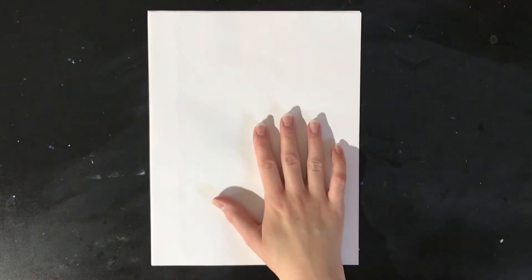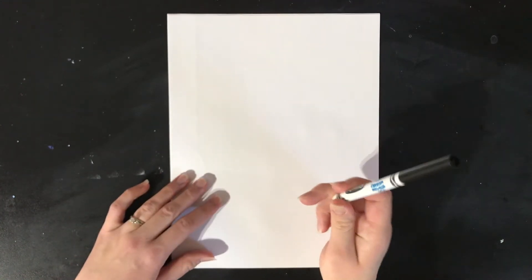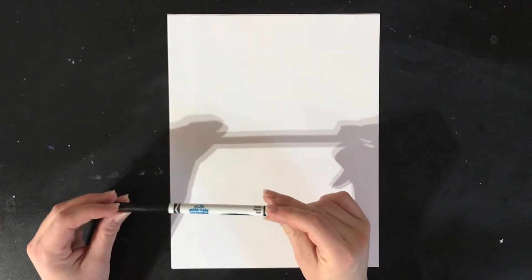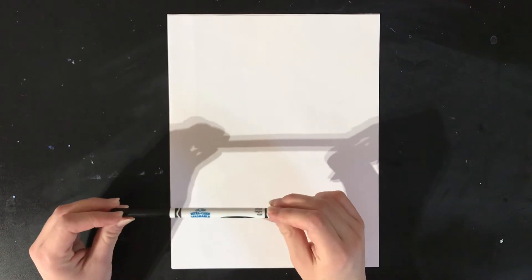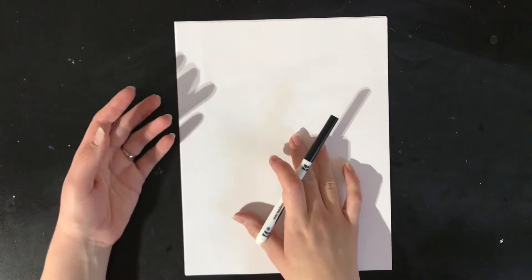So what we're going to need is a piece of paper or maybe multiple pieces of paper if you want to do more than one, something to draw with. I have a marker but you can use a pencil, colored pencil, or crayon, anything you want. To start off with, what we're going to draw is just our hand that we're not drawing with.